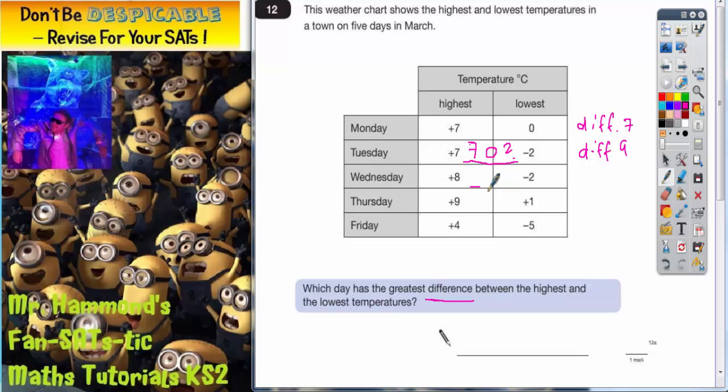We've got the same again for Wednesday. Pop a zero in the middle, so from zero up to eight that's just eight, and from zero down to negative two that's just two. So eight and two altogether makes a total difference of ten.